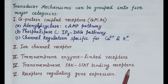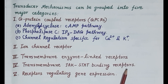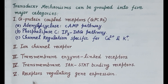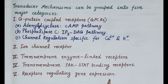The fourth type of transducer mechanism is transmembrane JAK-STAT binding receptors. Many cytokines, growth hormones, and prolactin produce their response through these receptors.